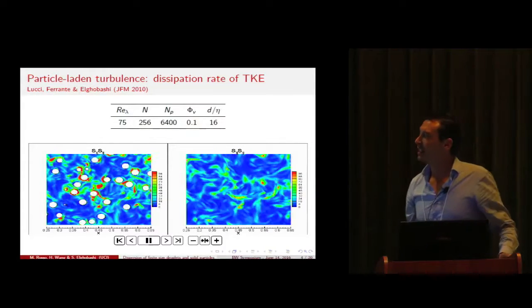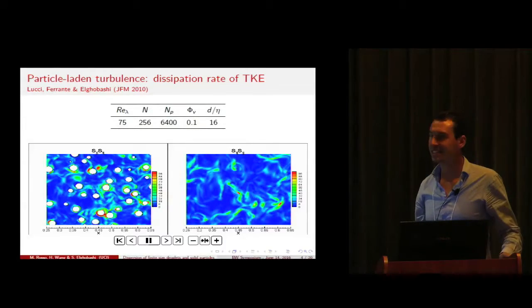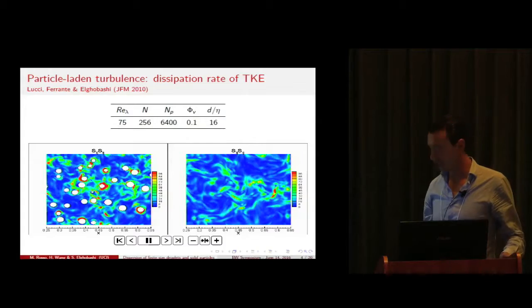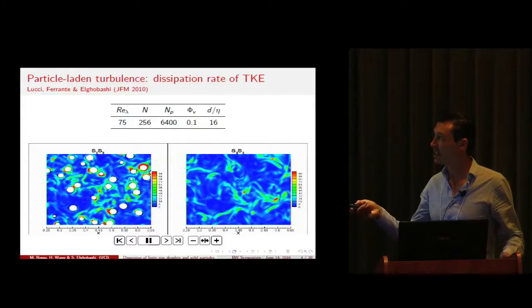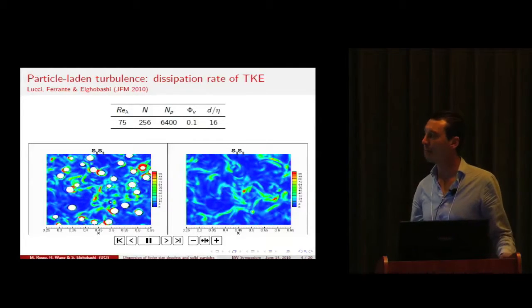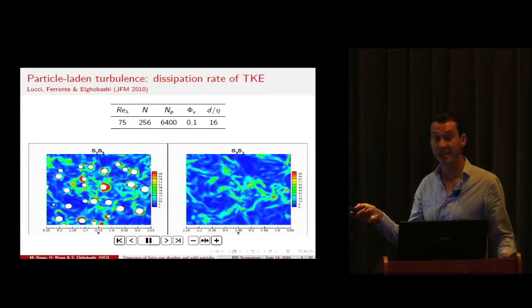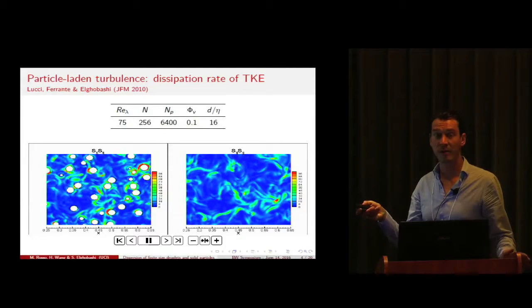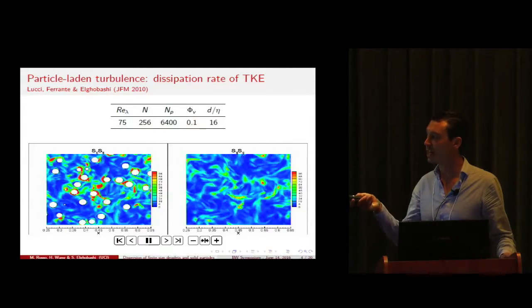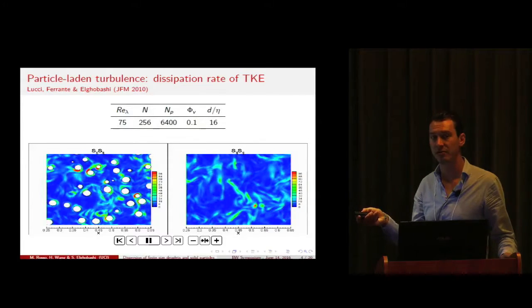Back in 2010, Lucci and Ali performed DNS of particle-laden turbulence. You can see here in the video a cross-section of a small portion of the computational domain. On your right you can see the dissipation rate of turbulent kinetic energy for plain decaying isotropic turbulence, and on your left you can see the same plot for the case of particle-laden turbulence.